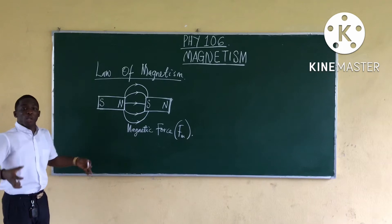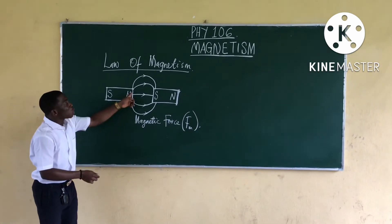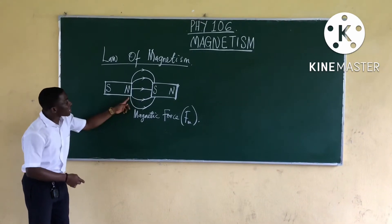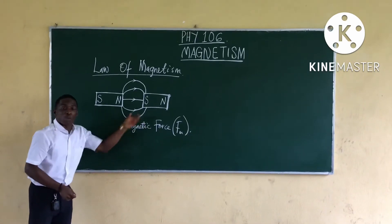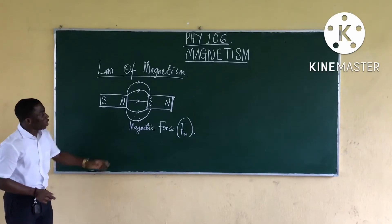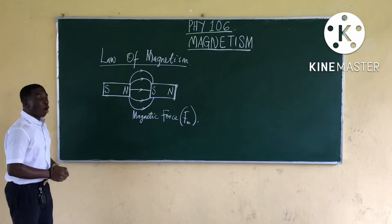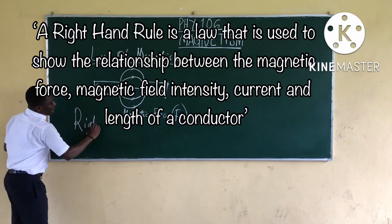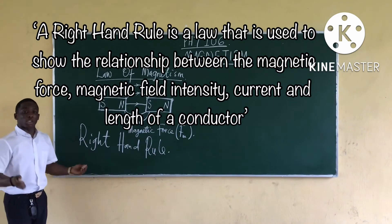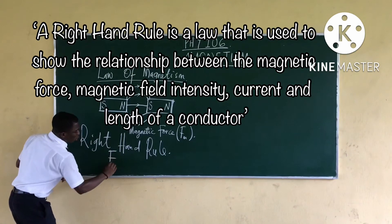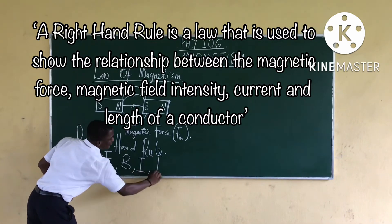Magnetic force is produced when two magnets are placed side by side such that they attract. They produce magnetic lines of forces that move from north to south. The law that verifies the relationship between the magnetic force, the current, the length, and the magnetic field intensity produced by the magnetic lines of forces is called the Right-Hand Rule. The Right-Hand Rule is a law used to show the relationship between magnetic force, magnetic field intensity, current, and the length of a conductor.